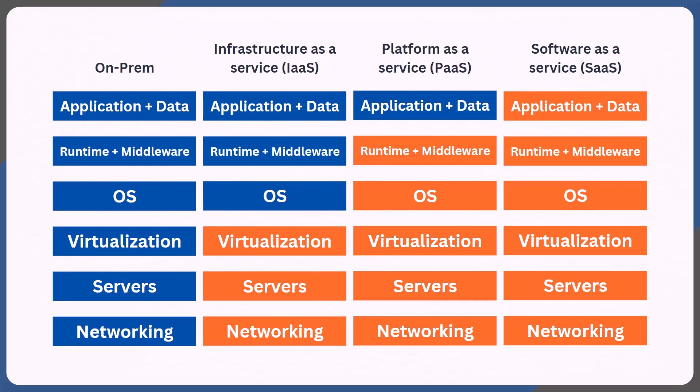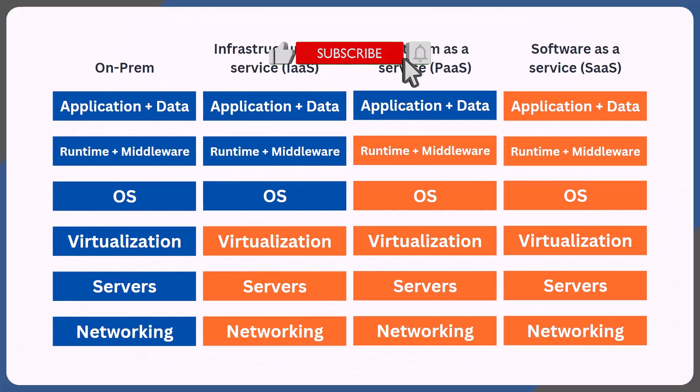Where do cloud service providers like AWS, Azure, and GCP fit in here? They actually provide a combination of all these services. Next, we're going to take a look at the characteristics of each one of these along with examples, so you'll have a better picture.